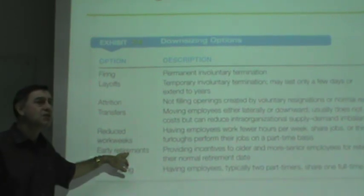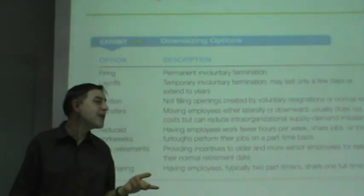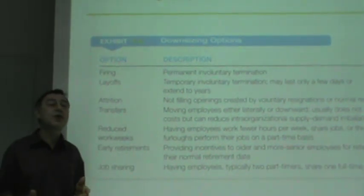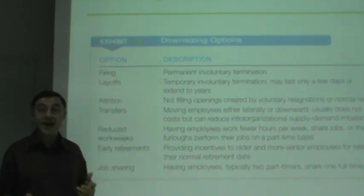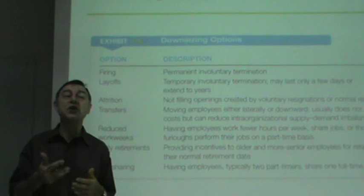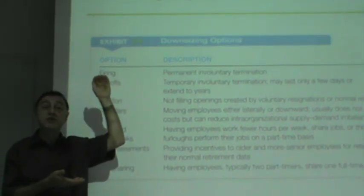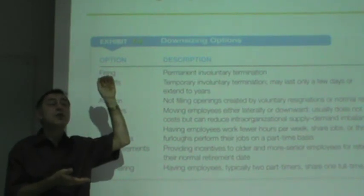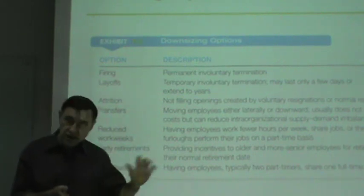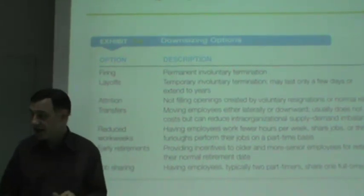And of course there's early retirement. When people are 62 or 63, close to retirement — maybe one, two, or three years away — a major corporation may offer them early retirement so they're no longer a burden. Instead of getting 100% of their retirement, the company offers maybe 90% so they don't have to work anymore. Some people accept that.